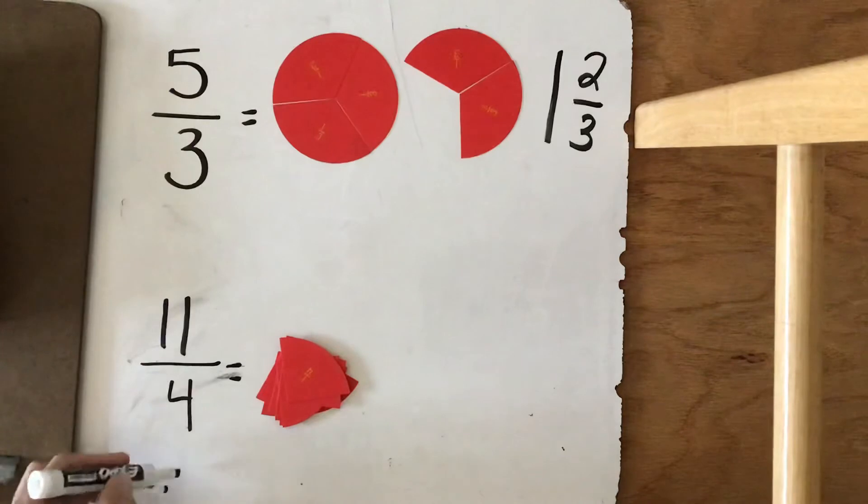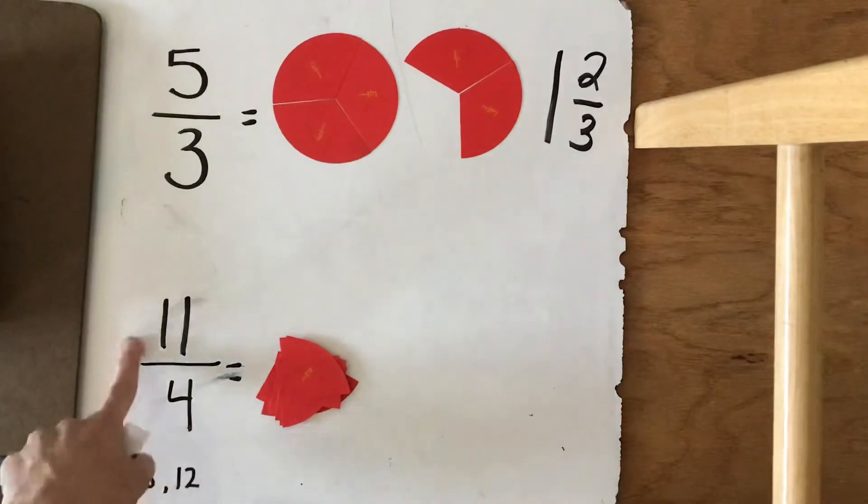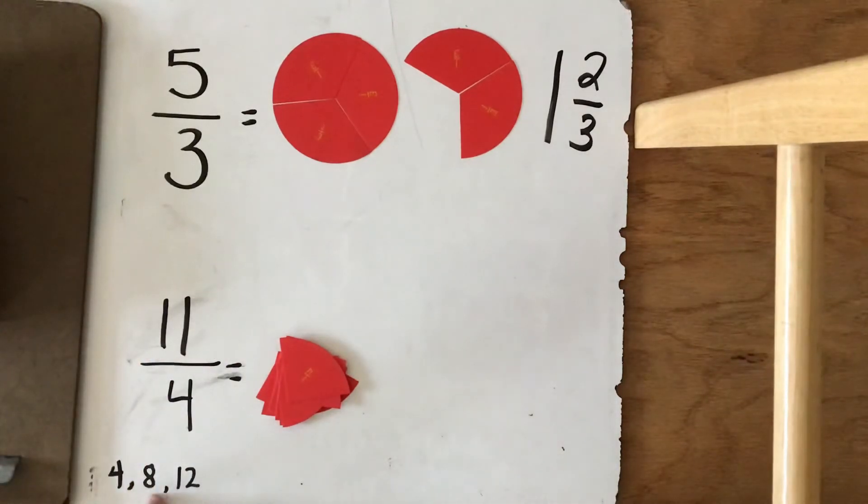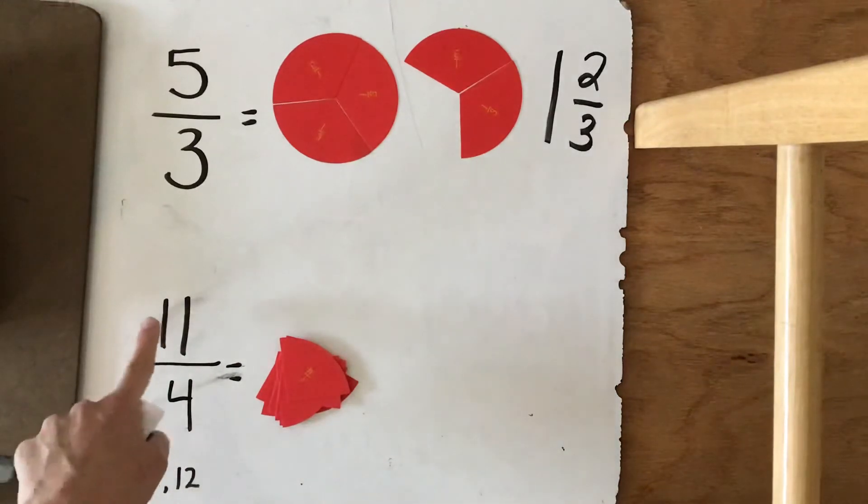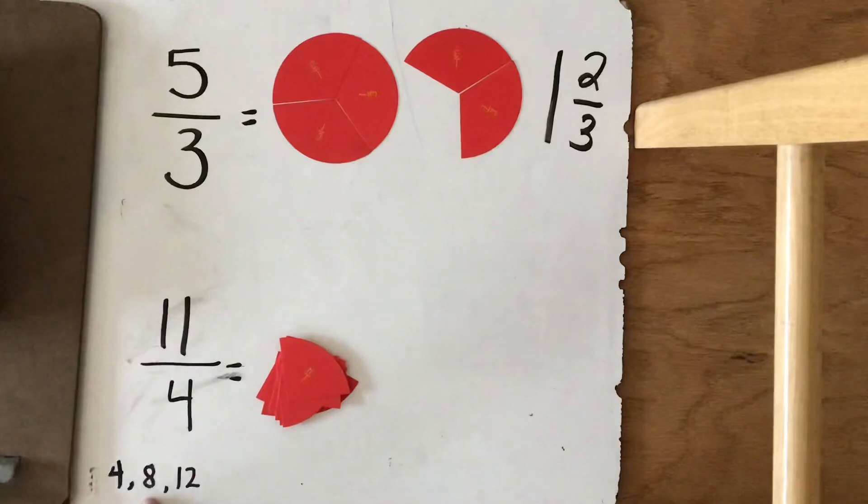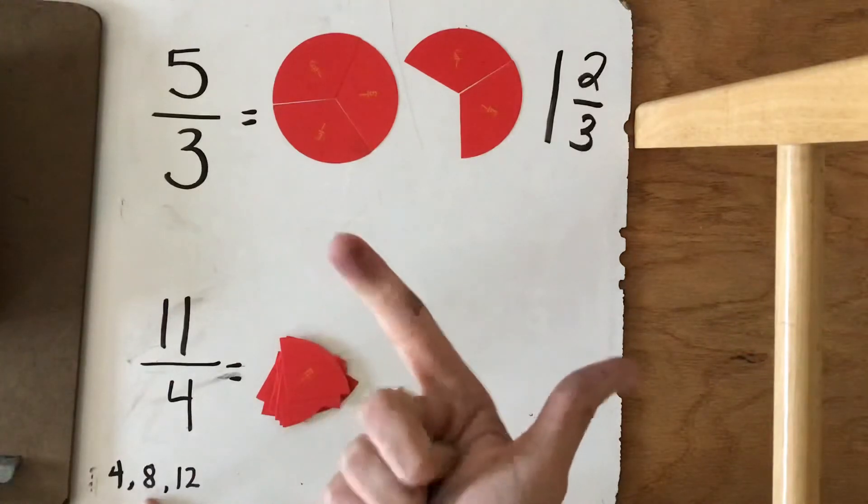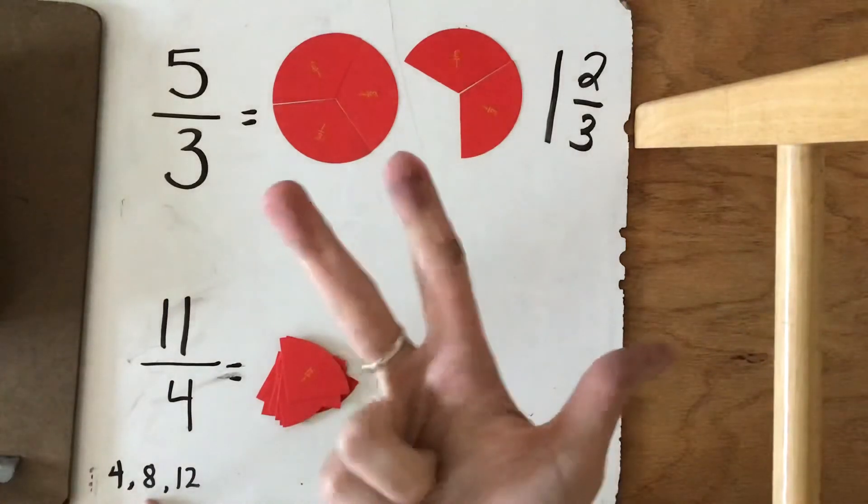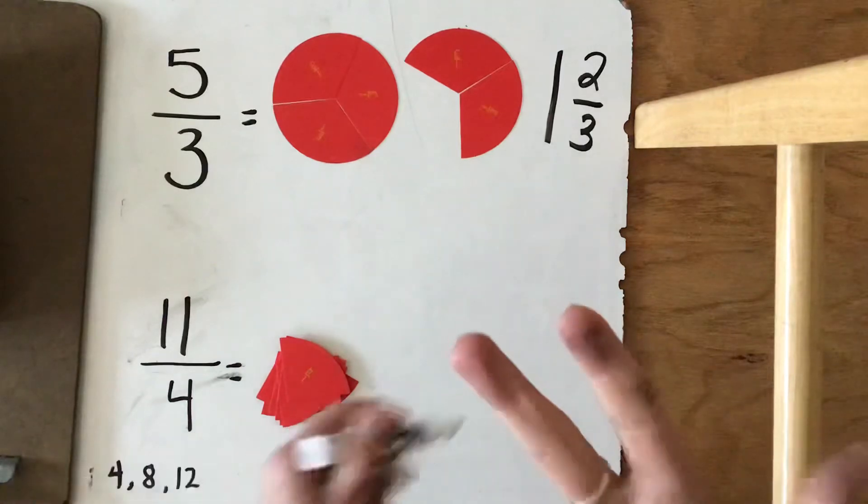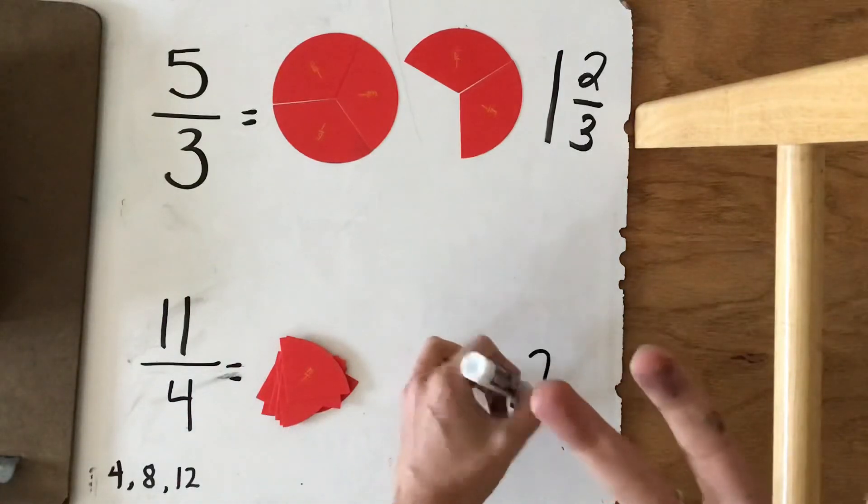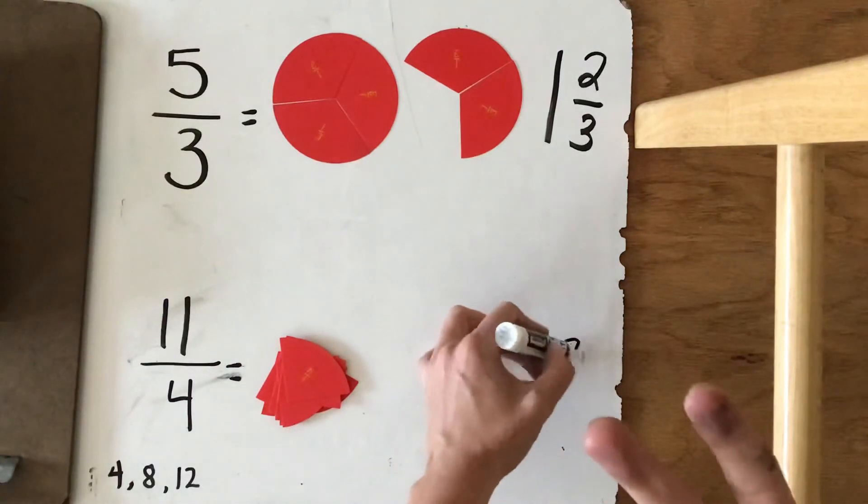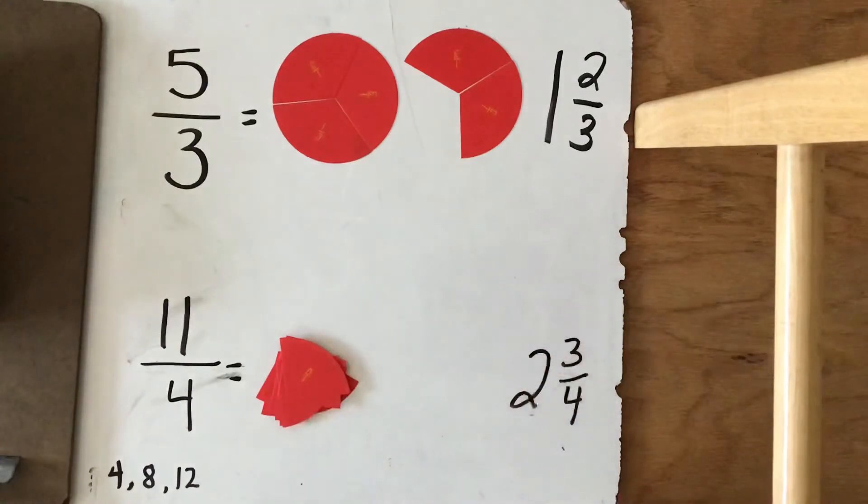4, 8, 12. Oop, 12 is higher than 11, so we'll stop there. Okay, so we know that 4 can go into 11 twice. And how many more do we need to get to 11? So we stopped at 8, 9, 10, 11. So we need 3 more fourths. So we can go in twice. And there's going to be 3 fourths left.